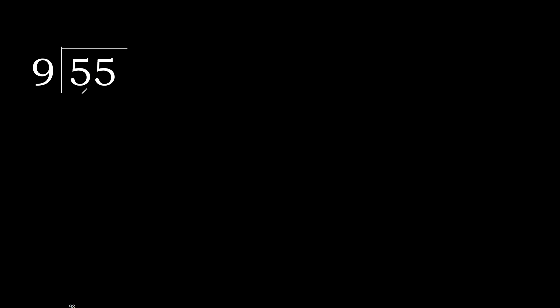55 divided by 9. 5 is less, therefore next. 55 is not less, therefore with 55. 9 multiplied by which number is nearest to 55.